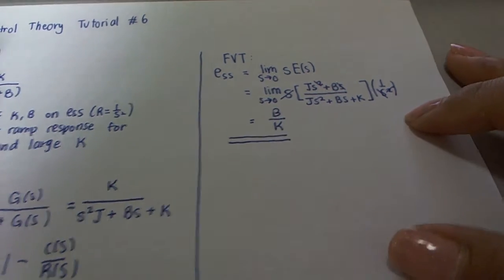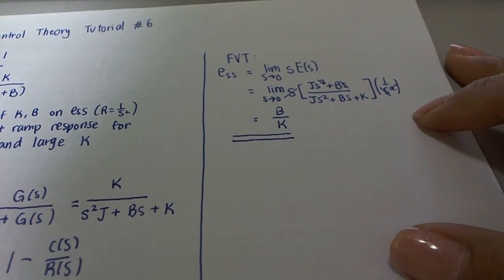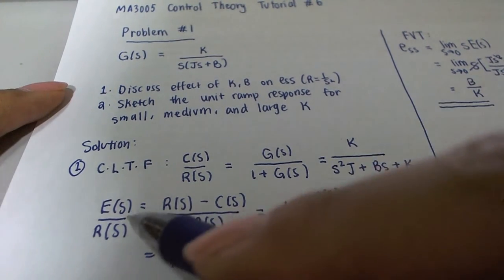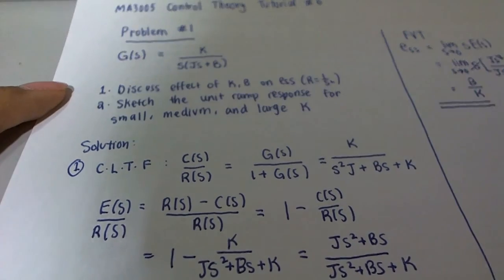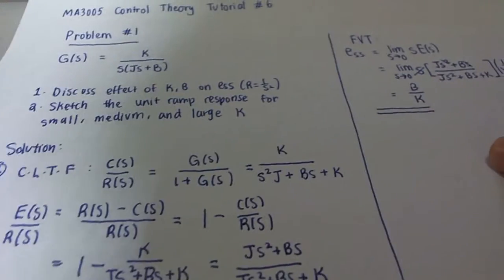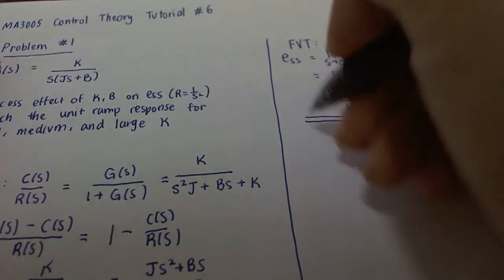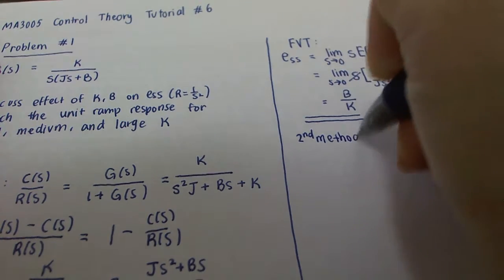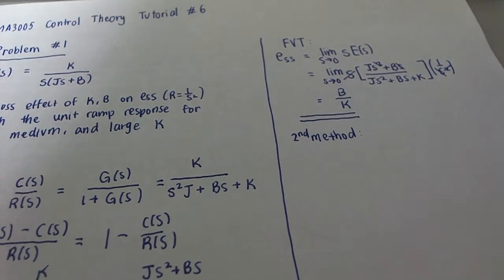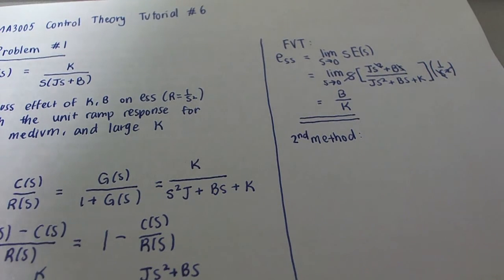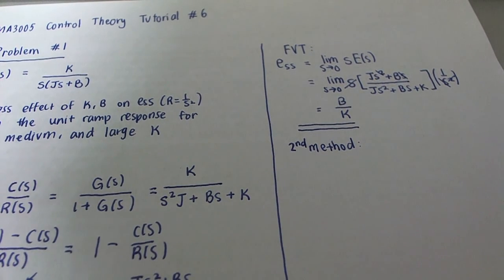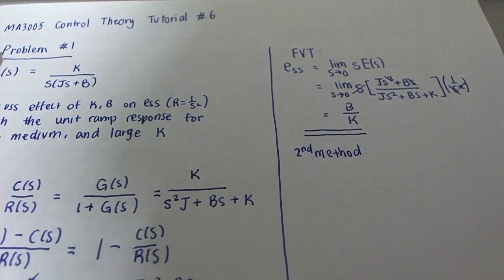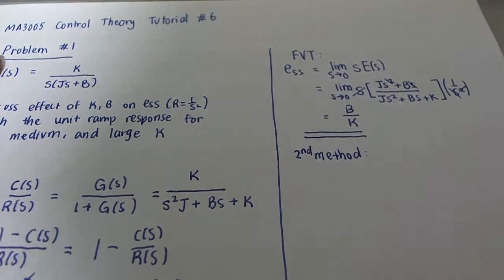Notice that this first method solves for steady state error using the general definition of error equals input minus output. You can also refer to the table given in the lecture for a second method, which may be simpler but requires memorizing formulas. The first method is longer but more intuitive since no formula memorization is needed.